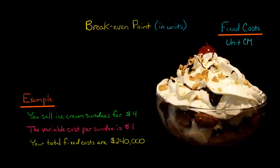In this video, I want to run through a quick example of how to calculate the break-even point in units. Let's say your company sells ice cream sundaes at a price of $4 each, the variable cost per sundae is $1, and the total fixed cost is $240,000.